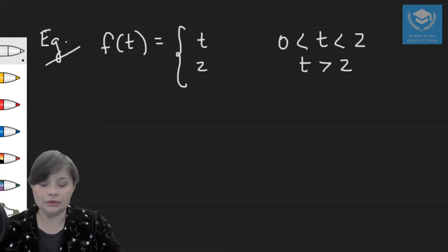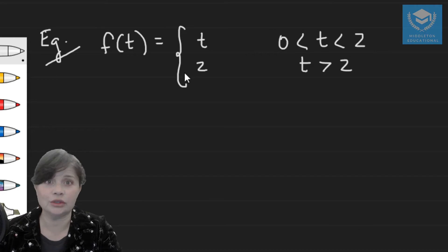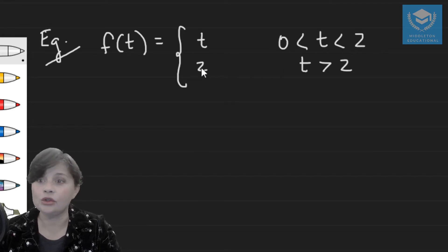So here we have an example. You'll see that we have a discontinuous function which is defined as t where t is between zero and two, and as two where t is greater than two.